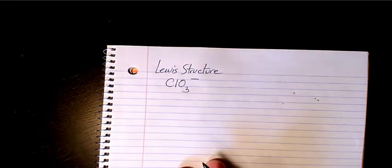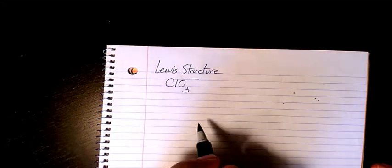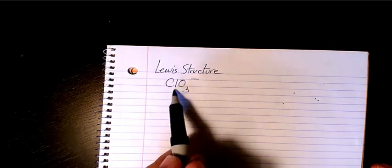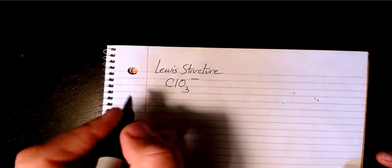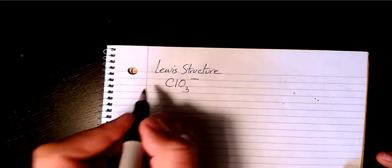What's up guys, this is Massey. Welcome to my channel. In this video I want to show you how to draw Lewis structure for ClO3 minus, or chlorate ion. So I start with counting the total valence electrons.